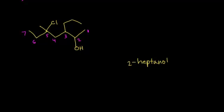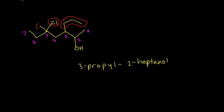Looking at the other substituents: coming off carbon 3 is a 3-carbon alkyl group, which is propyl — so 3-propyl. At carbon 5, we have two substituents: a chloro group and a methyl group. Alphabetically, C comes before M, so we list 5-chloro first, then 5-methyl. The full IUPAC name is 5-chloro-5-methyl-3-propyl-2-heptanol.